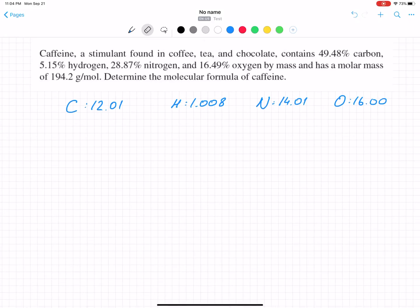Okay, our next problem with caffeine. Caffeine is a stimulant found in coffee, tea, and chocolate. Contains 49.48% carbon, 5.15% hydrogen, 28.87% nitrogen, and 16.49% oxygen by mass and has a molar mass of 194.2 grams per mole. Determine the molecular formula of caffeine.